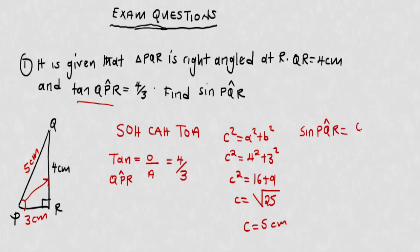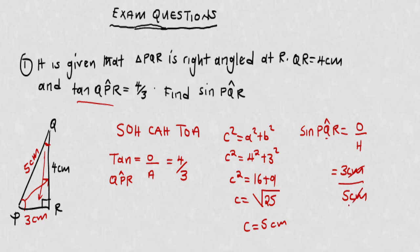Sin PQR is given by opposite over hypotenuse. Q is the middle letter, so we look at angle Q. The opposite of Q is 3 centimeters, and the hypotenuse is 5 centimeters. The centimeter units cancel, so the final answer is sin PQR equals 3 over 5.